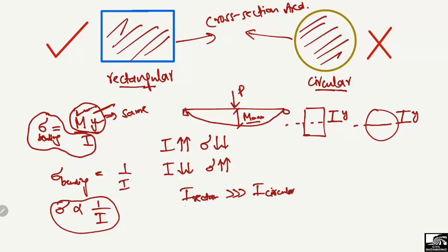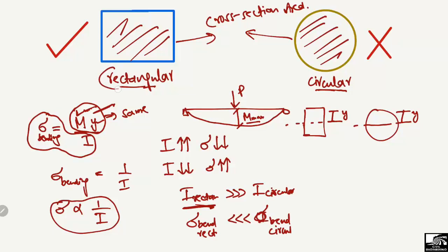Due to the higher moment of inertia of the rectangular cross-section, we have less bending stresses compared to the circular cross-section. Because the circular cross-section has a lower moment of inertia and higher bending stresses, we always choose the rectangular cross-section, which allows us to provide less reinforcement and achieve an economical design.